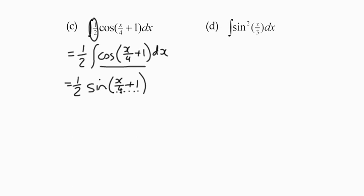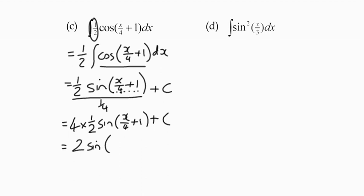So we've got the sine of x over four plus one, but we must divide that by the derivative of the inside term. So we're dividing by a quarter. You could do it like that. We've got a constant of integration. Dividing by a quarter is the same as multiplying by four, so we've basically got four times a half, one half sine x over four plus one plus c. And four times a one half is two.